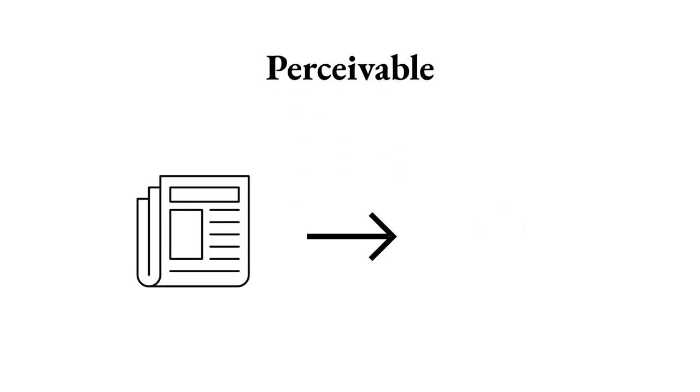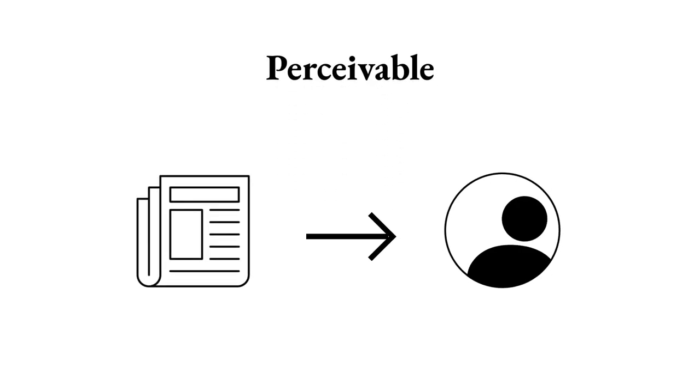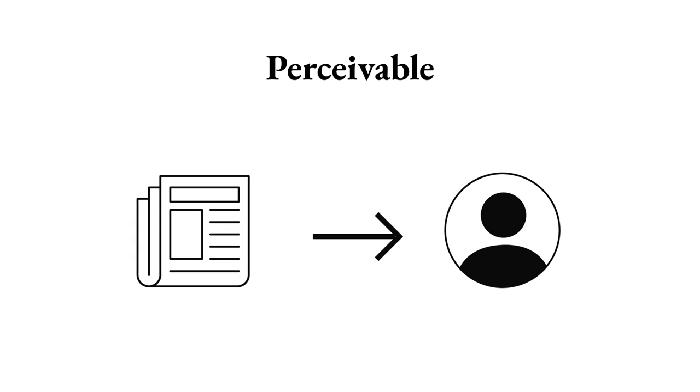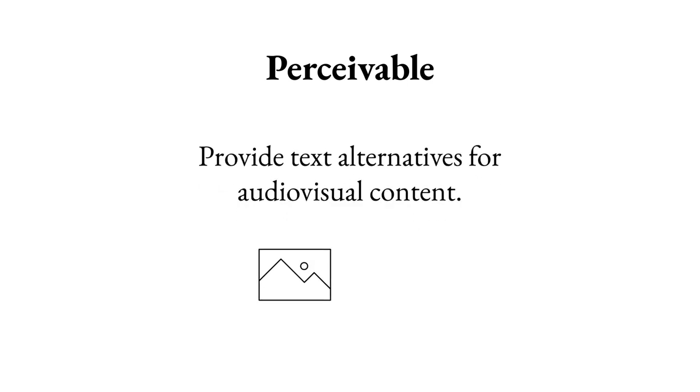Let's start with Perceivable. Perceivable means delivering the information so that anyone can understand it. For example, provide text alternatives for audio-visual content like images or videos.